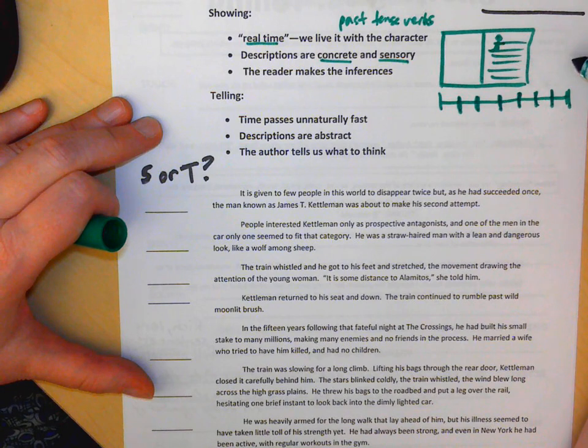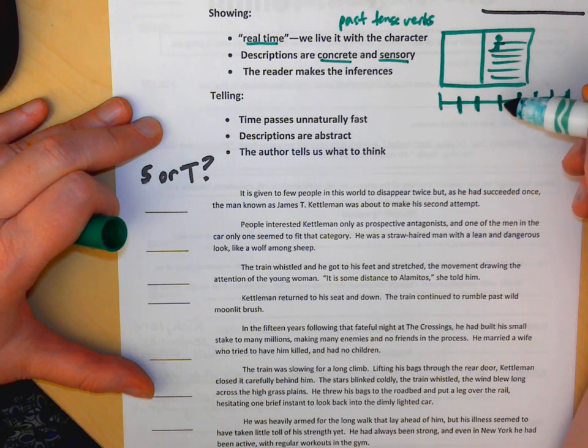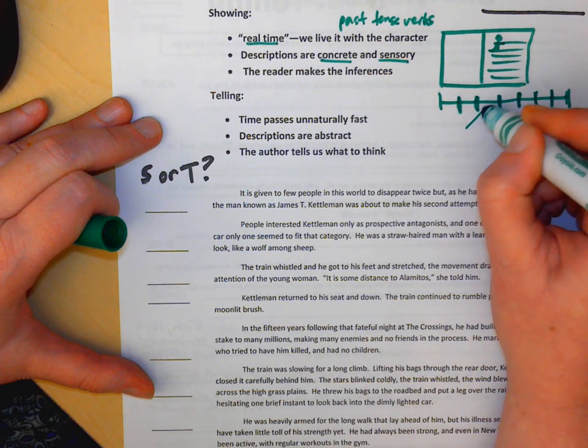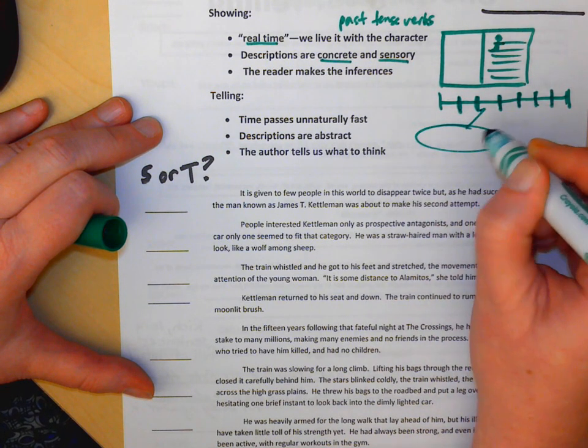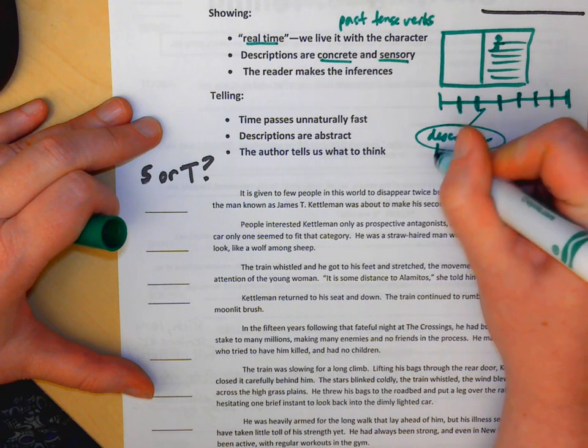And then maybe the author wants to come in, maybe after he eats his worm breakfast, the author wants to come in and tell us the history of worm cultivation on the planet. Random. So the author might come in and give us a telling detail that is descriptive, gives us some backstory.